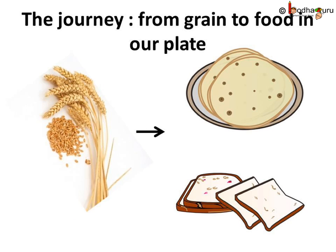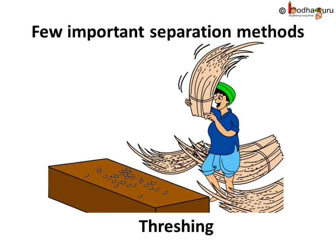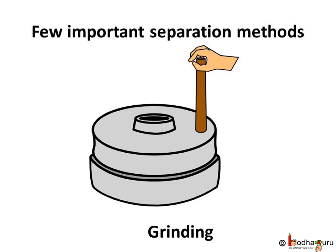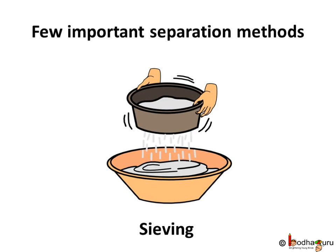Through many separation methods, the wheat grains from the farm reach our plates as chapatis and bread. In summary: first, the farmer separates wheat grains from the stalk by beating — this is called threshing. Then dust and loosened chaff are separated from the grain — this is called winnowing. Finally, flour is obtained by grinding, and impurities are removed by passing through a sieve — this is called sieving.